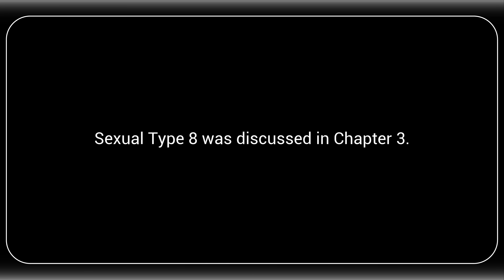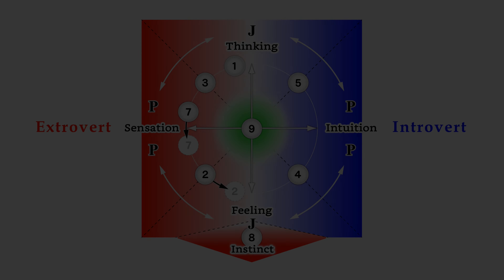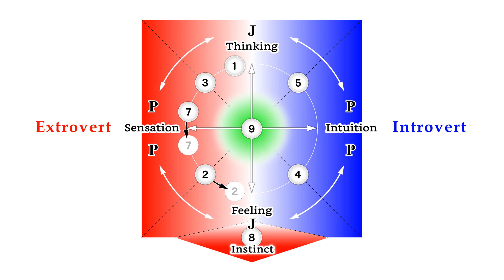As we have seen in this section and the previous sections, the zeptoform can be used to integrate Jungian types and enneatypes. In order to integrate these two systems, we must consider the violation of CP symmetry — the 9 enneatypes are not symmetrically located in the framework of Jungian typology. This violation of symmetry is intrinsically related to the creation of the universe, as discussed in Chapter 2.